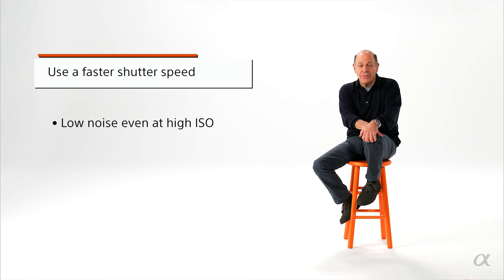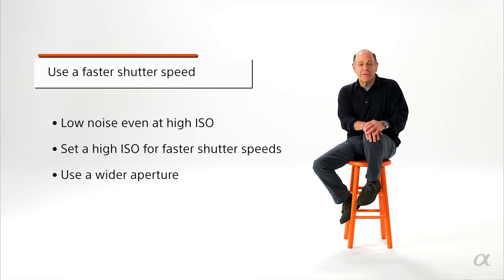Move your shutter speed up — going to 1000, 2000, 3200 is nothing. Keep your ISO high so you can keep your shutter speed up. Keep your lens open more. Don't worry so much about depth of field in most pictures. Worry about blur and movement.